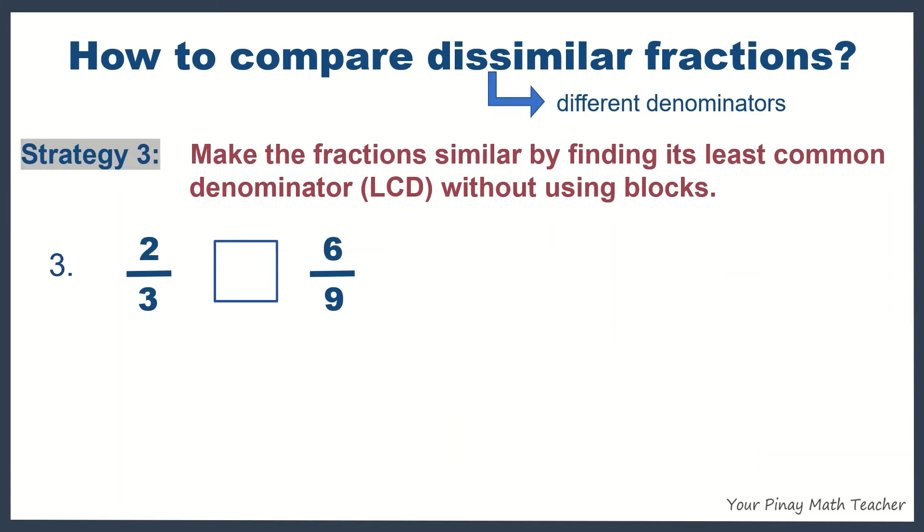Number 3: 2 thirds and 6 ninths are dissimilar fractions because they have different denominators. We have to make them similar by finding its LCD or LCM. List the first few multiples of 3,